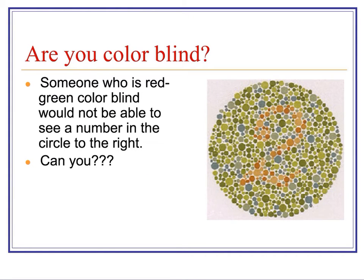While we're talking about colorblindness, the most common form is red-green colorblindness. If someone were red-green colorblind, they would not be able to see the number that appears in the circle on the right-hand side. Hopefully you can see it — if not, you might want to go see your eye doctor. It's not a fatal condition, but hopefully you can all see that there is the number 2 in that circle.